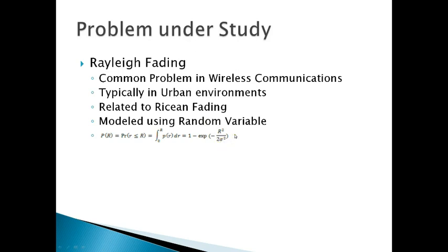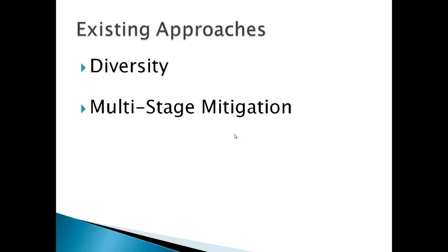Moving on, there are two existing approaches that I looked into. The first one is diversity, and really what I focused on was a primitive version of diversity. The second, which I found interesting, is this multi-stage mitigation, where there's multiple types of mitigation to solve one problem.